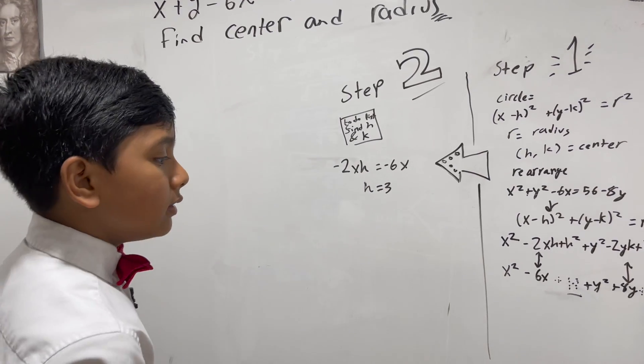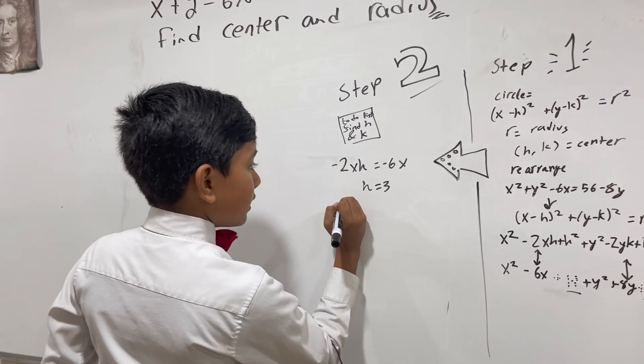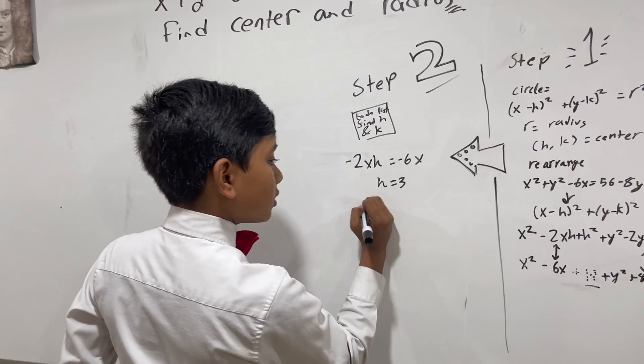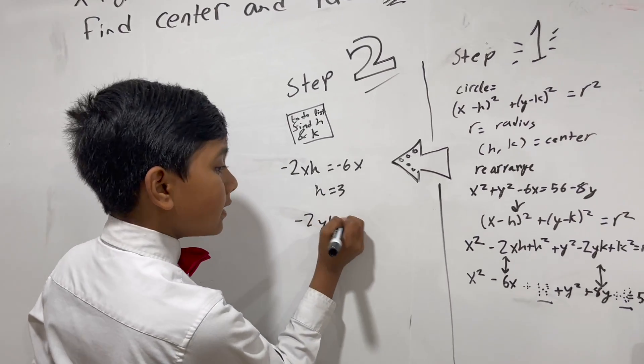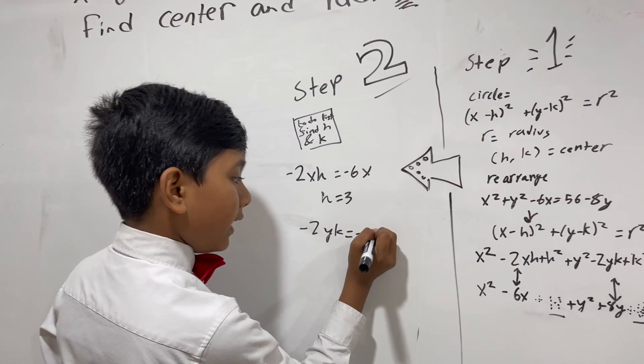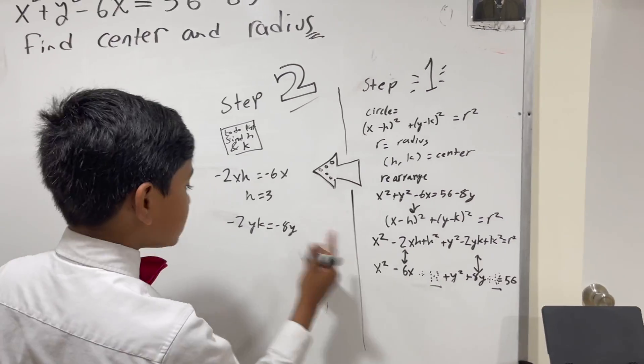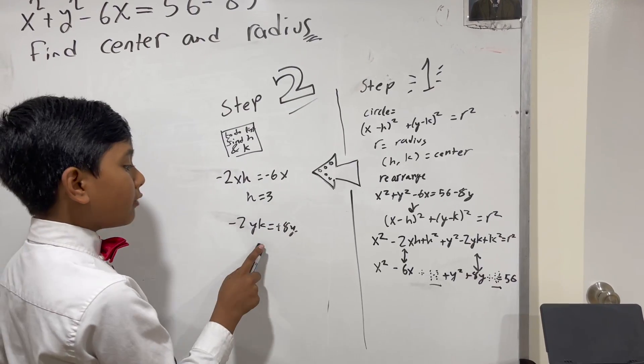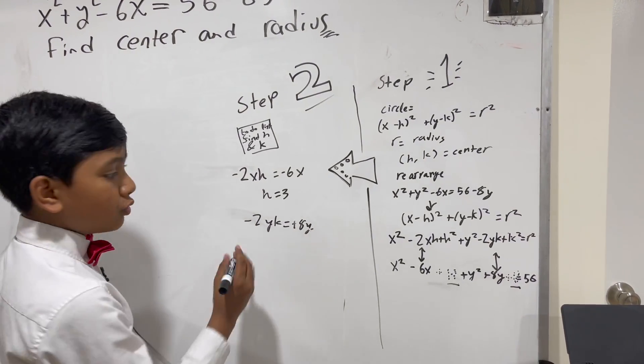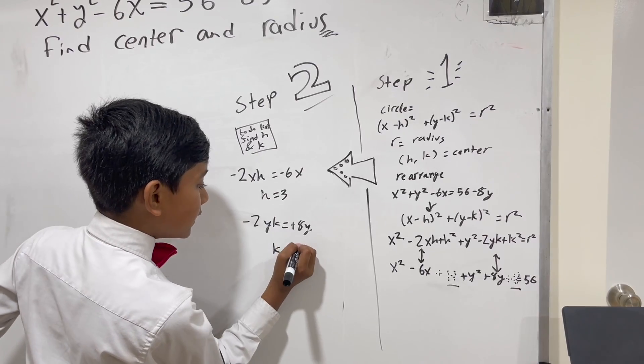And, then, you have K. Negative 2YK equal to positive 8Y. So, now, we divide both sides by negative 2Y, and we get K equals negative 4.